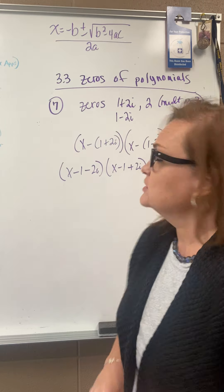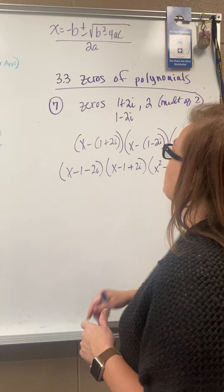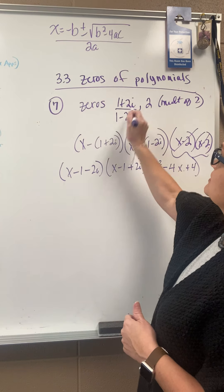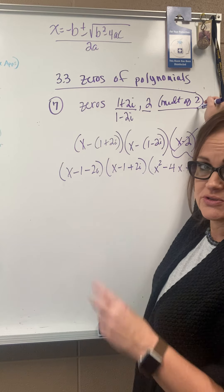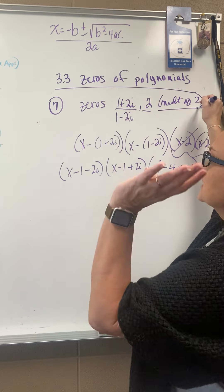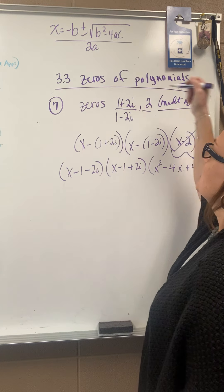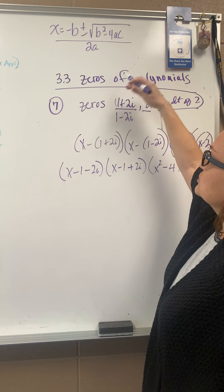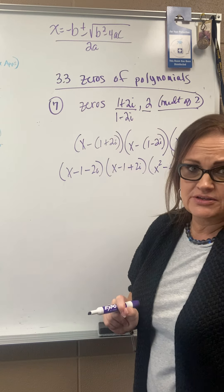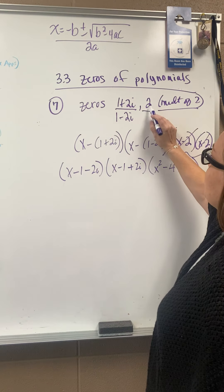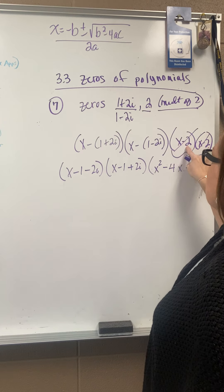Here we are still in section 3.3, looking at number 7 from your notes. It told us that we have a zero of 1 plus 2i and of 2 with multiplicity 2 — so it's there twice. This is actually a fourth degree polynomial when it all gets multiplied together. If 1 plus 2i is a zero, its conjugate 1 minus 2i is also a zero. Multiplicity means it is repeated two times, so x minus 2 twice.